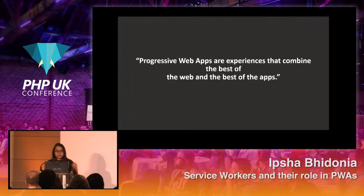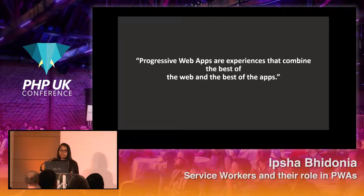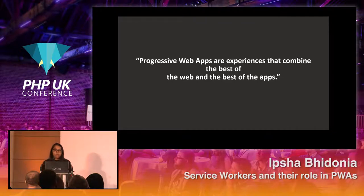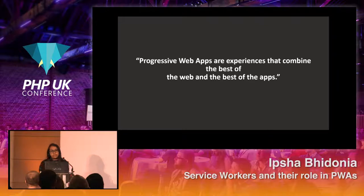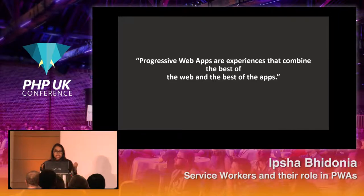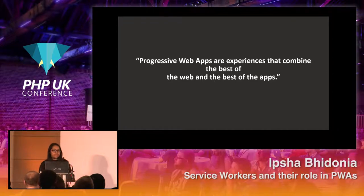So what if I tell you there's a way to combine the best of the web and the best of the native? That's exactly what progressive web apps do. We come up with an application that leverages the low friction of the web but at the same time is as readily and easily available as native applications. Progressive web apps are experiences that combine the best of the web and the best of the native apps. Now, why is this important? We want more and more people to use our applications, and that can be measured in two parameters: the reach of the application and the user engagement.